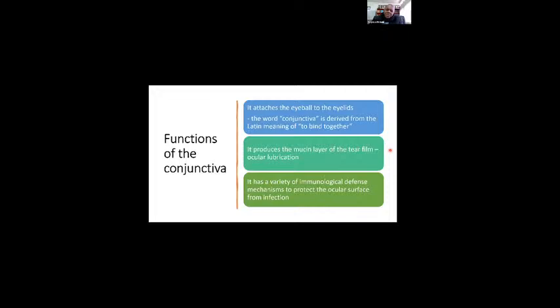The conjunctiva also has an important immunological defense function. It has secretory IgA, lymphocytes, and dendritic cells for presenting antigens. So it has a very important immunological defense mechanism and as you'd expect you would also have immunological diseases affecting the conjunctiva.